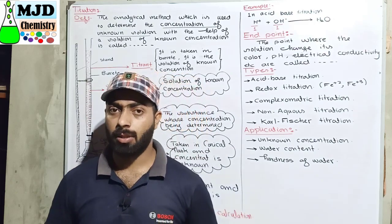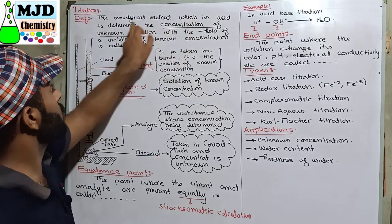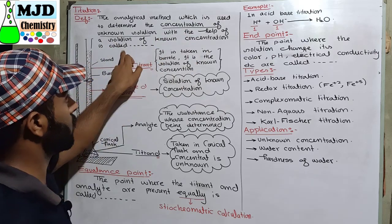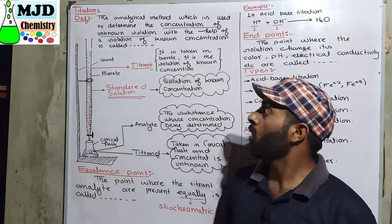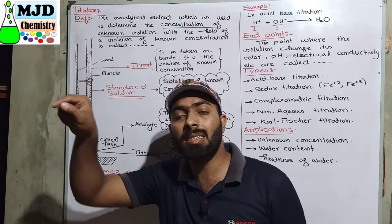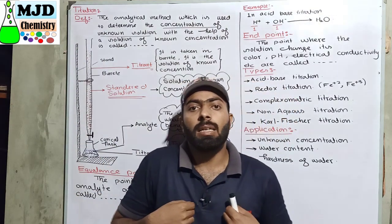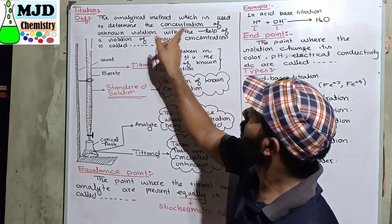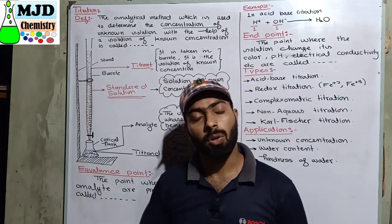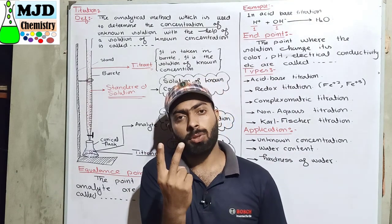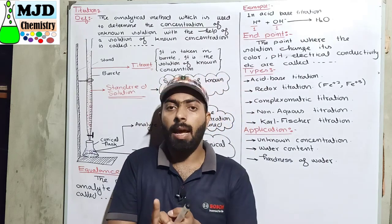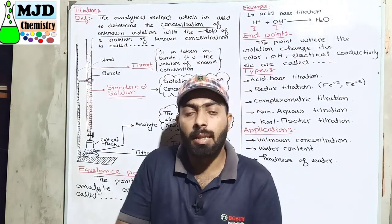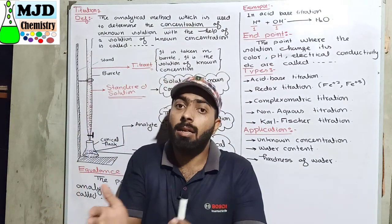First of all, we define titration. Titration is the analytical method which is used to determine the concentration of an unknown solution with the help of a solution of known concentration. Two solutions are used: one whose concentration is unknown, and another whose concentration is known. We use the titration method to determine the concentration of the unknown solution.